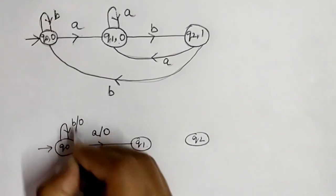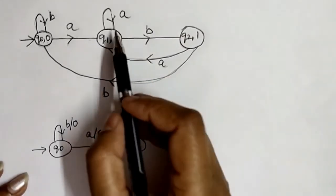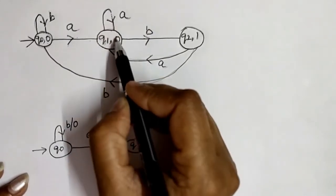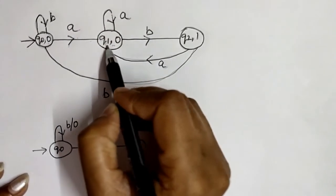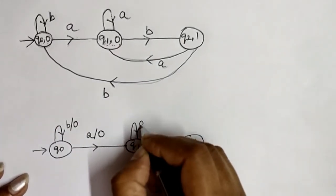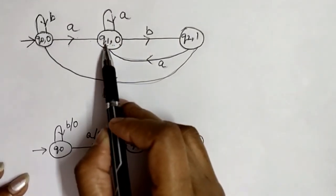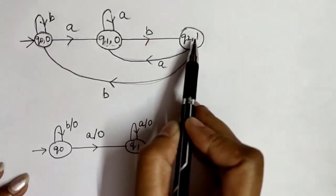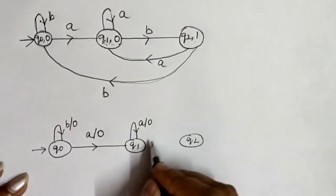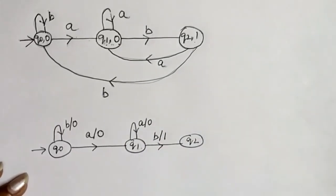Next we consider state Q1. For Q1 with input A: it remains in the same state Q1, which is associated with output 0, so output 0 is associated with transition A. For Q1 with input B: it moves to the next state Q2, and Q2 is associated with output 1, so B is associated with output 1.